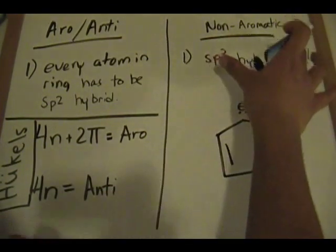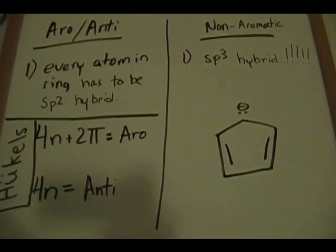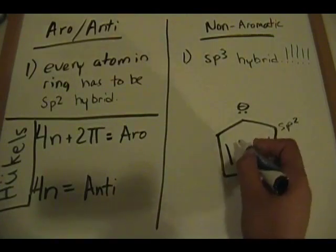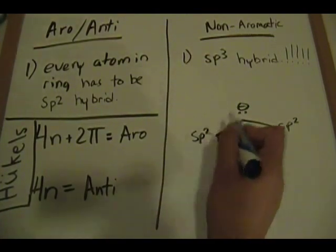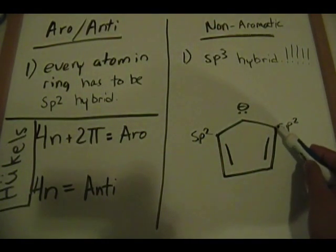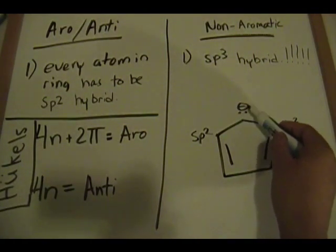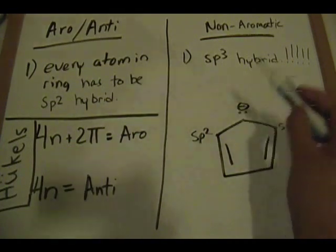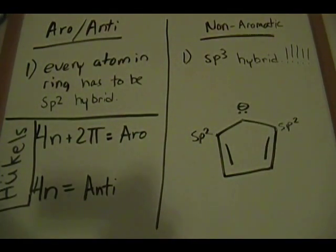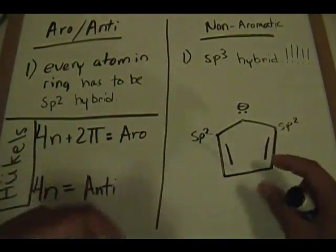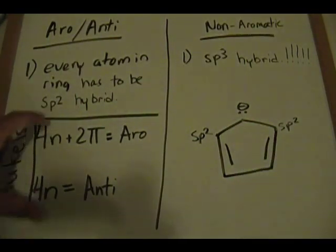So since we cannot identify an sp3 atom, the non-aromatic category is ruled out and we move on. To restate: if you have an sp2 hybridized atom attached to an atom with a lone pair, that atom with the lone pair is also sp2 hybridized. Therefore all atoms in this five-membered ring are sp2, and we proceed to count pi electrons.